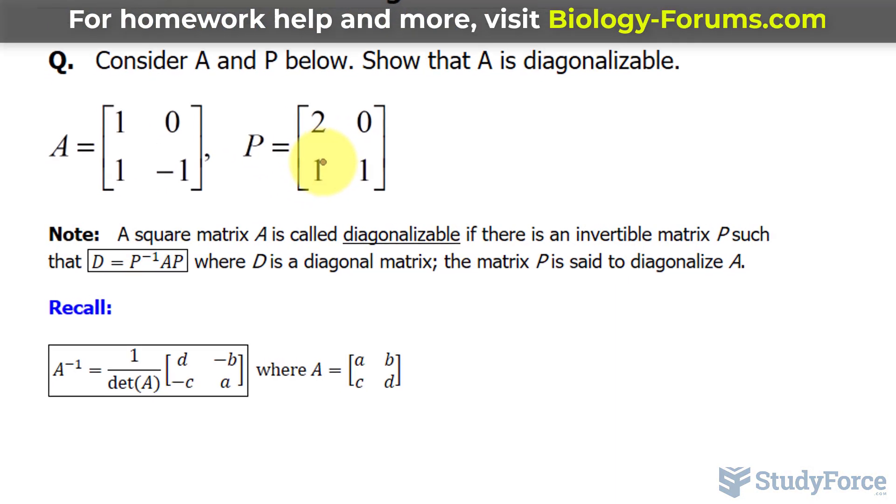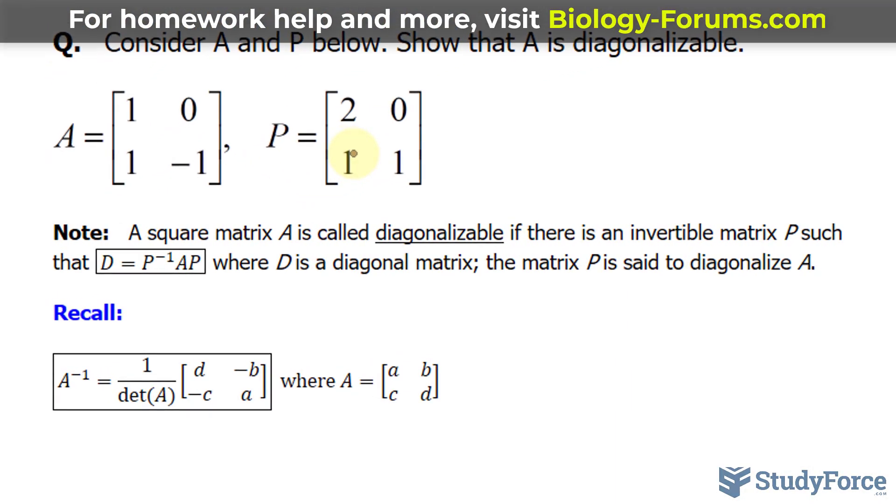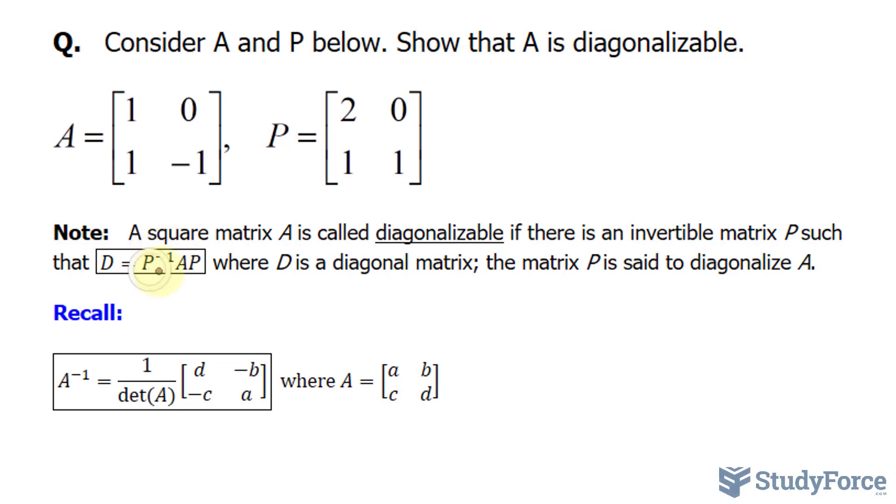Before we start, remember that a square matrix A is called diagonalizable if there is an invertible matrix P such that D equals the inverse of P times A times P, where D is the diagonal matrix and the matrix P is said to diagonalize A.